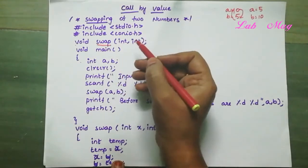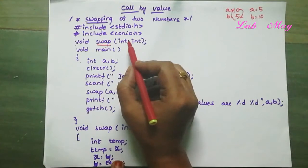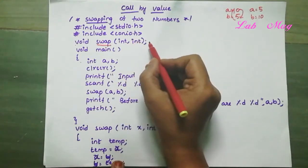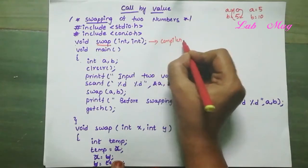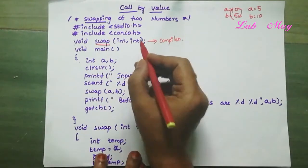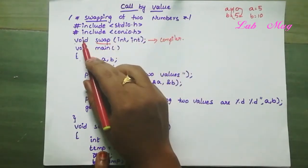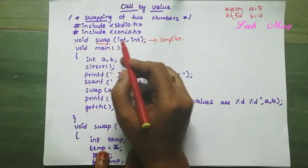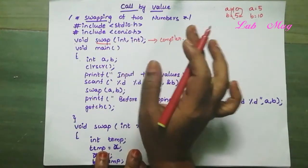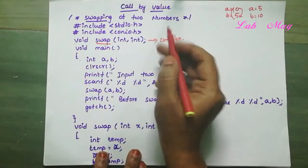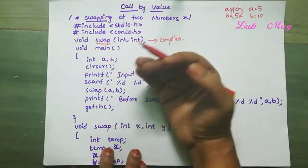We have integer variables. First we write hash include stdio.h. Then we write the function declaration — only the function name and the parameter data types — so the compiler knows what type of function to expect from the user.